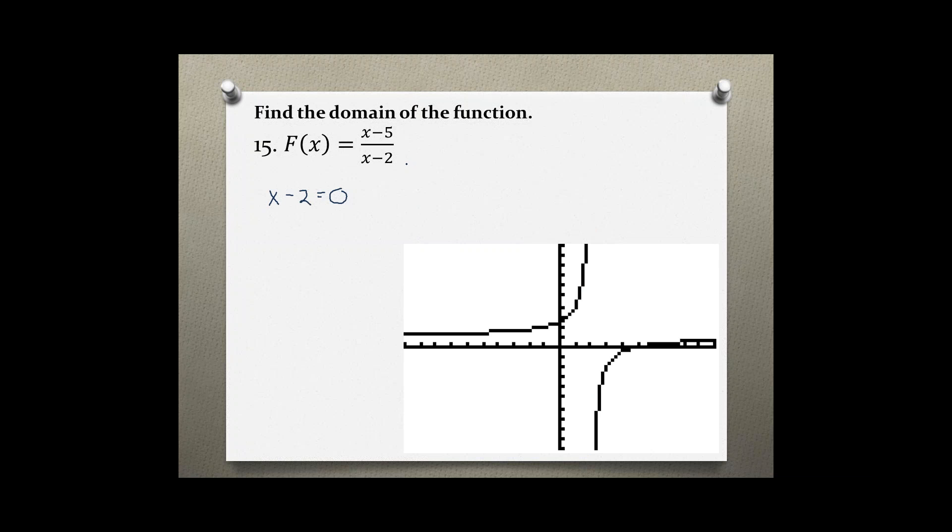We're trying to find this one value which would make the denominator undefined. Solving for x, we add 2 to both sides, which gives us x equals 2.